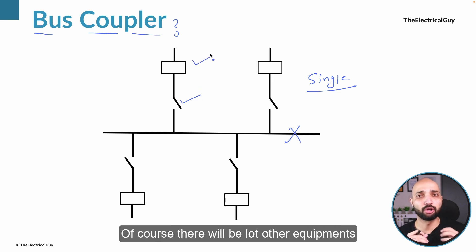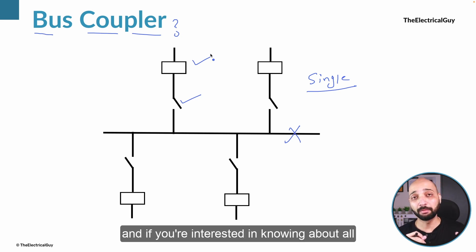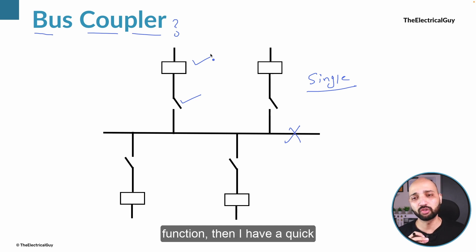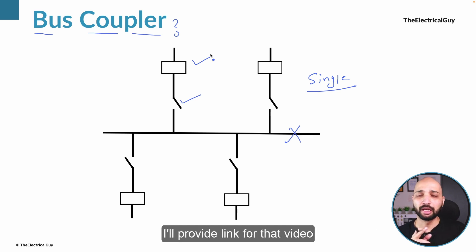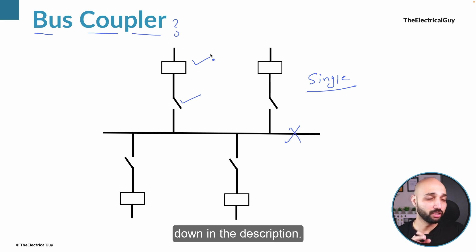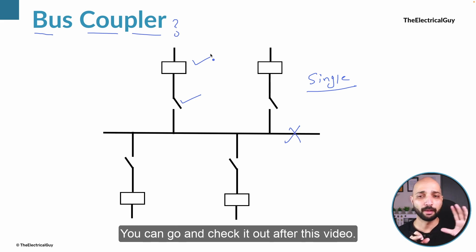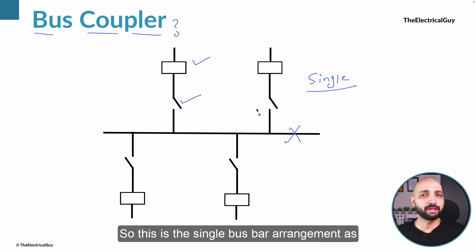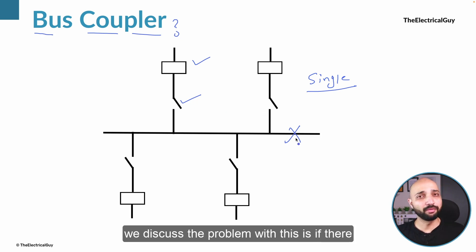Of course there will be a lot of other equipment, and if you are interested in knowing about all the equipment we use and their functions, I have a quick revision video on that — I'll provide a link in the description. So this is the single bus bar arrangement. As discussed, the problem with this is if there is a fault the whole substation is going to turn off.